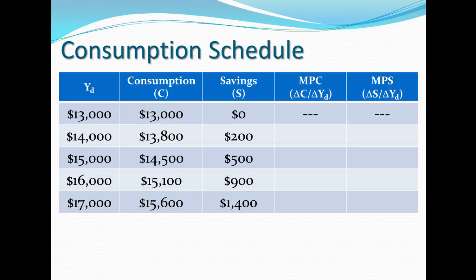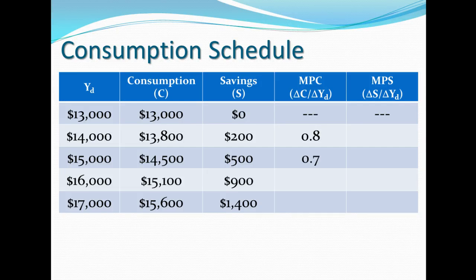This is showing someone who earns $13,000 a year and they spend all $13,000. The next year they make $14,000, so their change in disposable income is $1,000. However, they only spend an additional $800. Thus, the change in their marginal propensity to consume is 800 over 1,000, which is 0.8. The next year they earn an additional $1,000 and spend an additional $700 — from $13,800 to $14,500 — so it's 700 over 1,000, which is 0.7. The next year it's $600, so it's 0.6, and then $500 over 1,000, so it's 0.5.